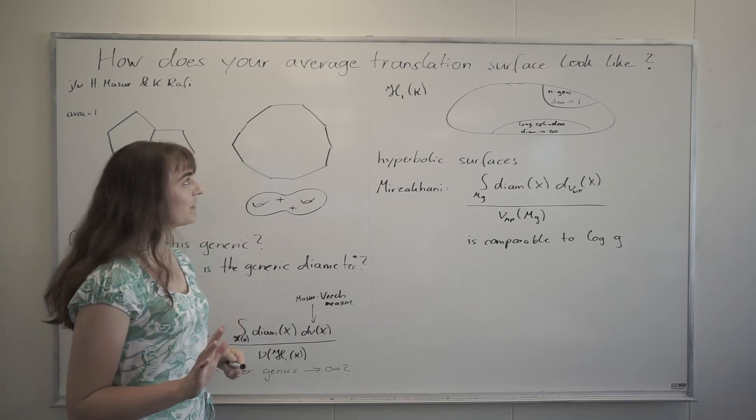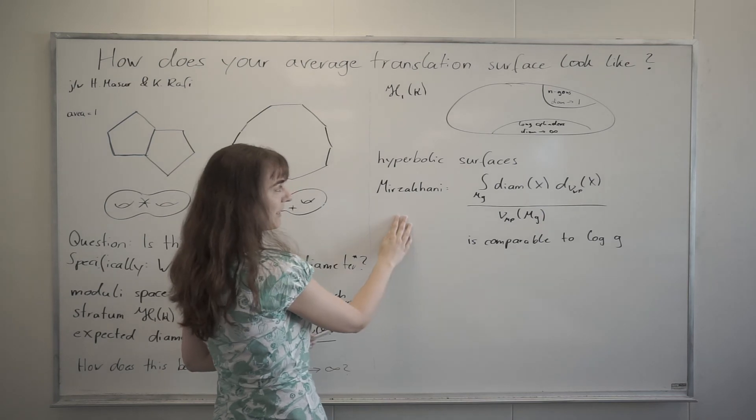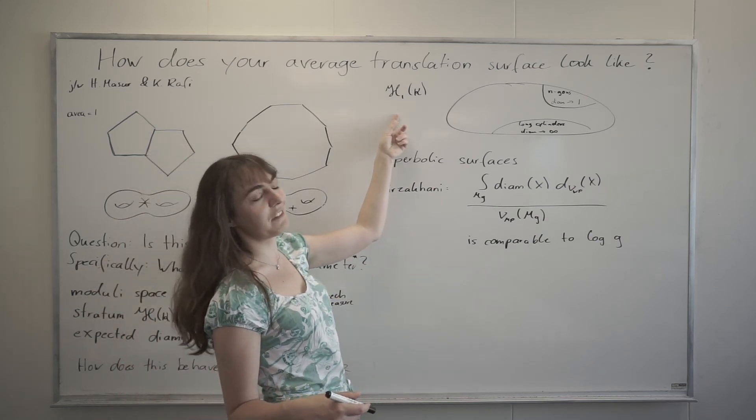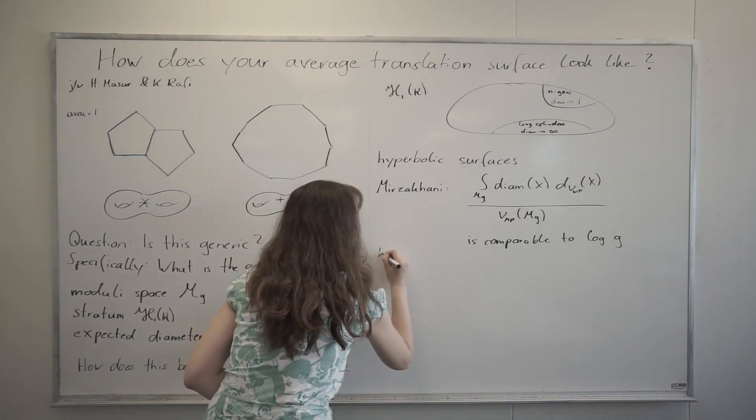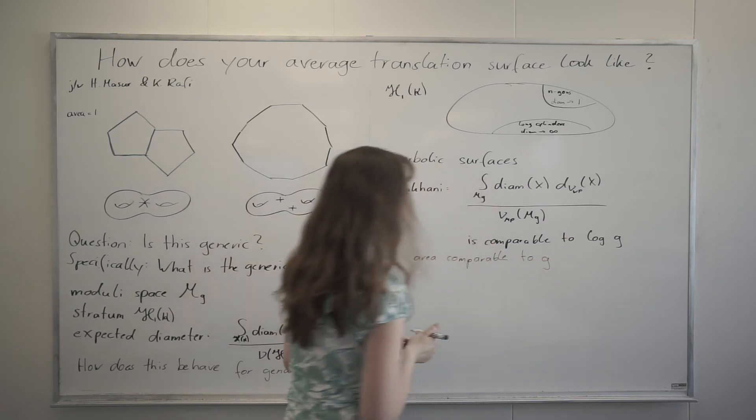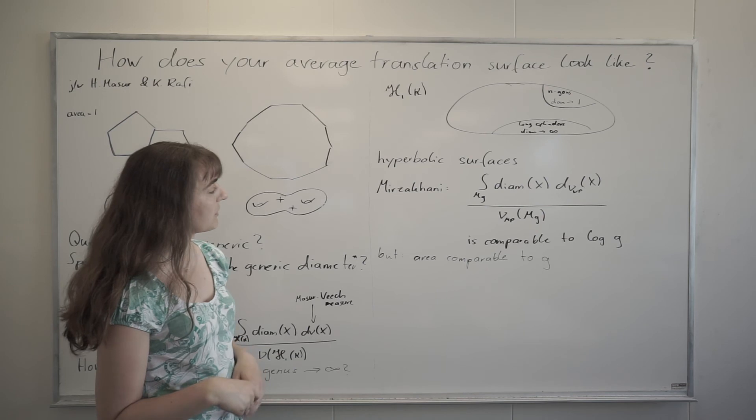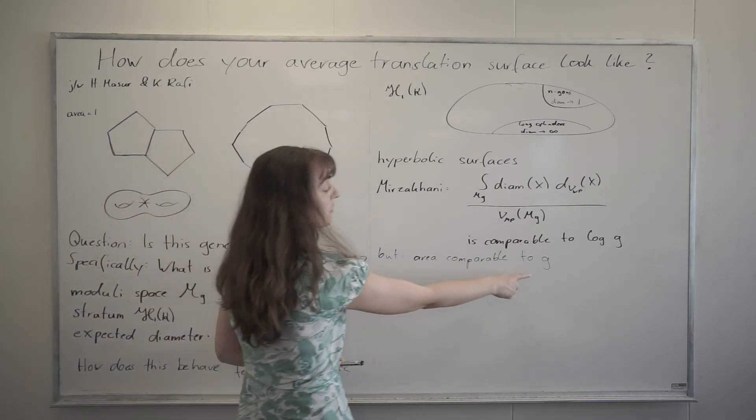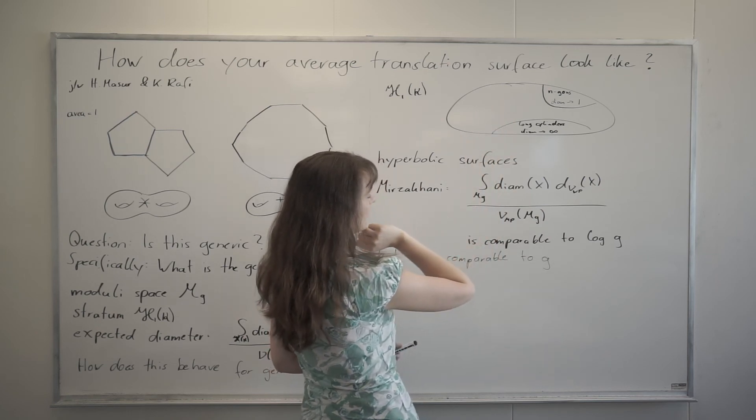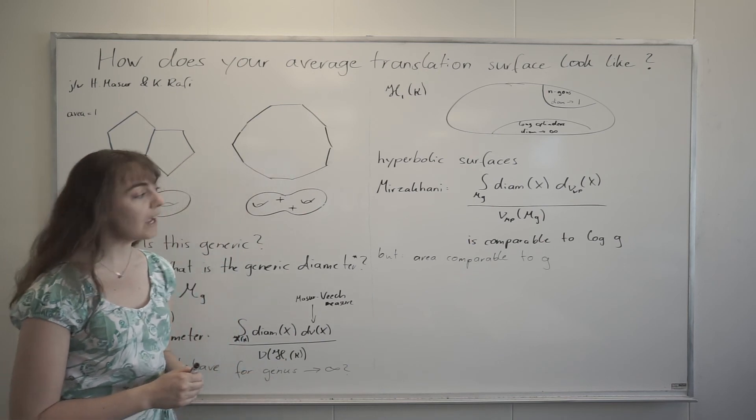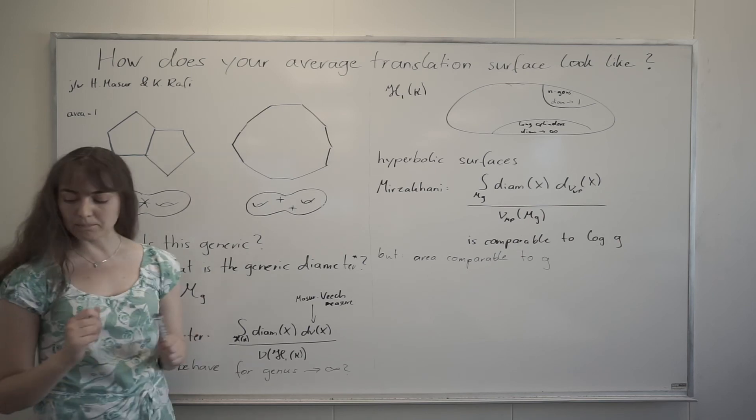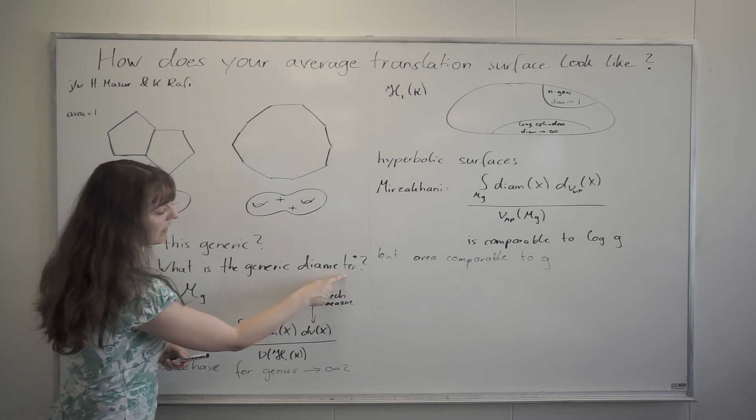But there's one thing we have to be careful with, which is when you are in the hyperbolic case, meaning you have a constant curvature minus one, then your area is not one like we have fixed it here. Your area is comparable to g. So if we would expect a theorem which is similar to Maryam's theorem, then we would have to scale by a factor square root of g. So we would get that the expected diameter is log g over square root of g. And we are going in that direction, but not exactly. So I will give you the theorem in a minute. I would just want to tell you exactly what's the point of this star here.